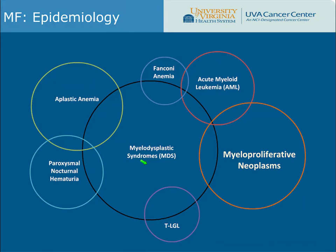This slide looks at all myeloid diseases together using a Venn diagram, showing significant overlap. Myelofibrosis neoplasms overlap with myelodysplastic syndrome and acute myeloid leukemia. It is very important that when you receive a diagnosis of a myeloproliferative neoplasm, the correct diagnosis is verified by a hematopathologist, since these conditions can closely resemble each other.